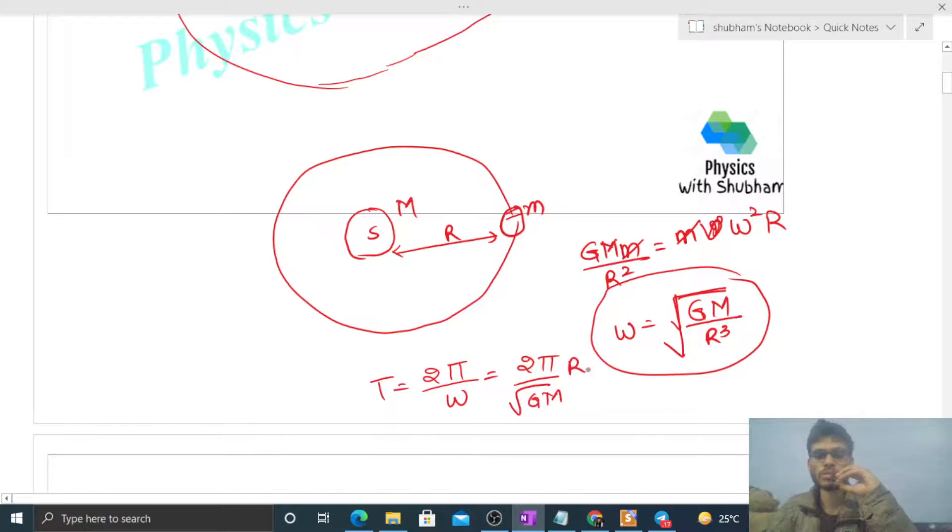So that will be 2π divided by under root GM, r rise to the power 3 by 2. So this becomes 2π under root, GM is constant here.